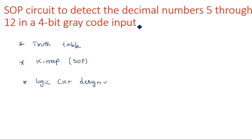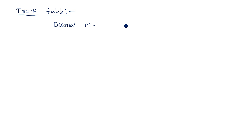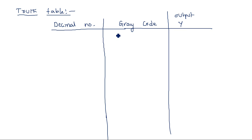The first step is the truth table. According to the input question — designing the SOP circuit for identification of decimal numbers 5 through 12 in a 4-bit Gray code input — the columns are: decimal number, Gray code, and output Y. The output is a single bit. Since it is a 4-bit Gray code, we are taking the input format as A, B, C, D.